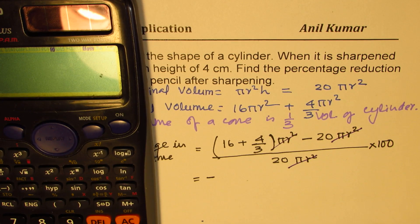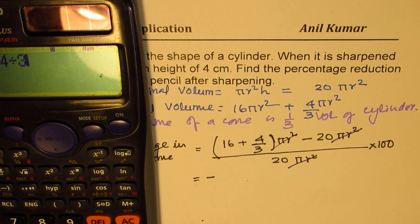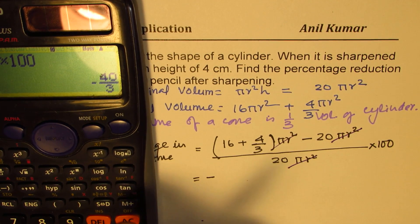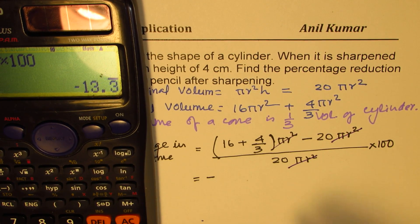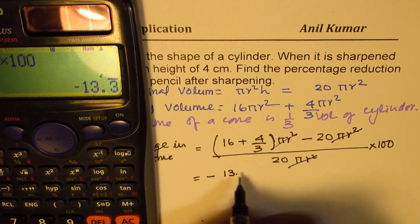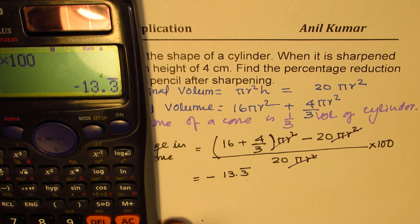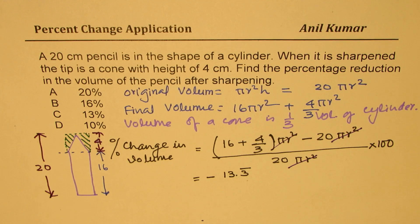So what we can do is we can do 16 plus 4 divided by 3, and we'll take away from this 20, and then we'll divide this by 20, multiply by 100 to get our answer. So in decimals it is 13.33.